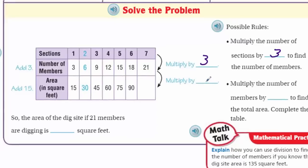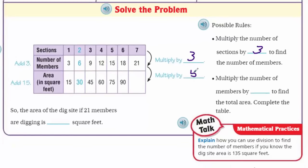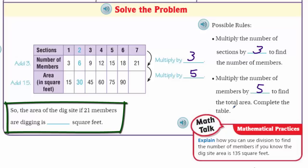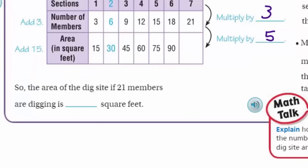Five. Is that what you were thinking? You are so smart. Yes. You are smarter than a fifth grader. Okay. It says, so, the area of the dig site, if 21 members are digging, is blank square feet. Oh, I see. Well, now that we know that it's a multiply by five, then I could just take my 21, right, and multiply that by five, because that's that relationship that we're looking at. And what do we get? One hundred five square feet.